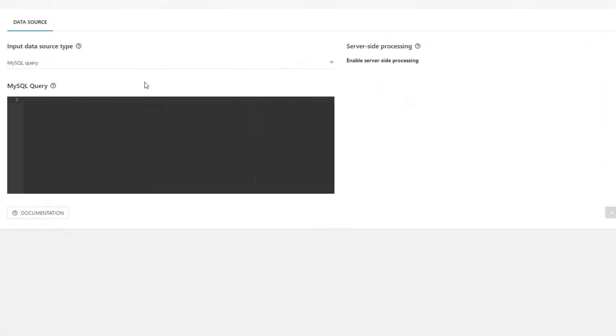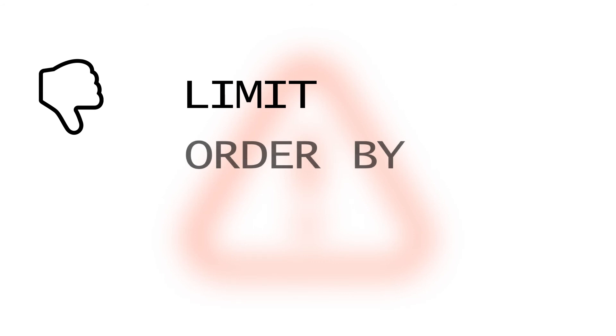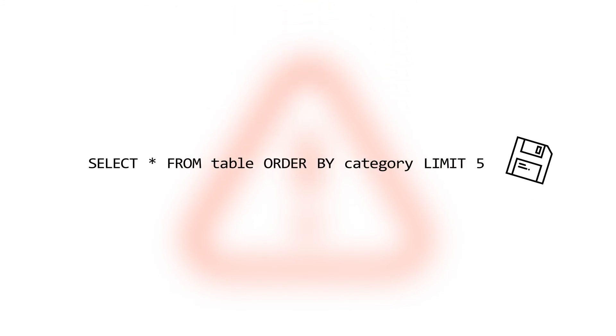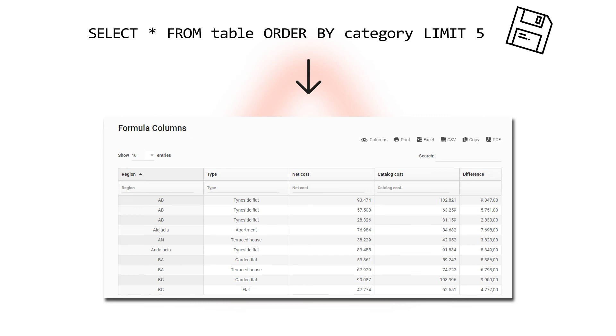Let's address some limitations of using MySQL queries to build WPDataTables. You should avoid using LIMIT and ORDER BY clauses in your query. These are added dynamically by the WPDataTables engine when you use pagination, sorting, and filtering, so whatever you enter will be overwritten. If these are really needed, a MySQL View stored query can be used, and a WPDataTable can be created based on a query to this view.